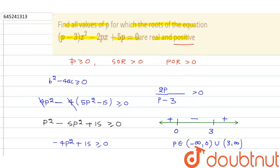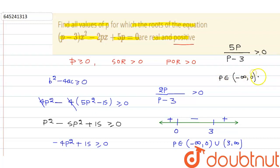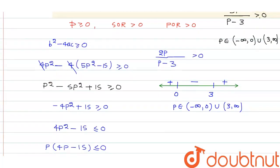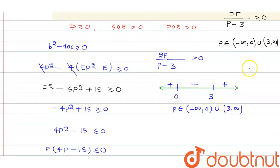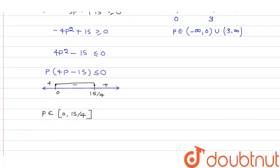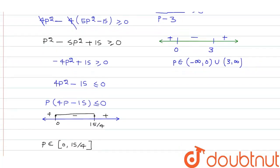For the product of roots: c/a = 5p/(p-3) > 0. This gives the same result: p ∈ (-∞, 0) ∪ (3, ∞).